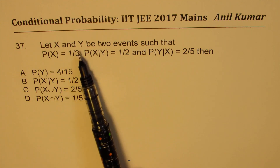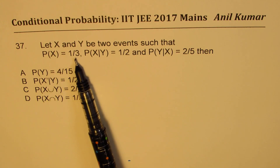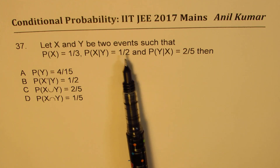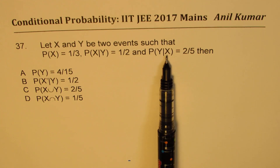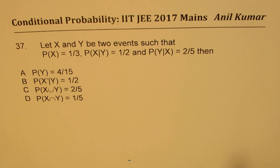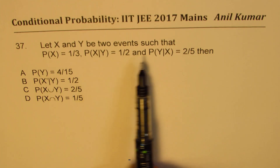Let X and Y be two events such that probability of X is one-third, probability of X when Y has occurred is one over two, and probability of Y when X has occurred is two over five. Then, which one of these is true? In IIT-JE multiple choice questions, more than one could be correct, so you need to verify all the solutions.